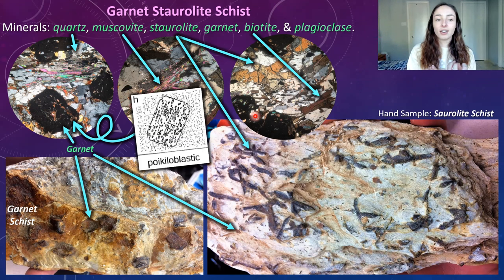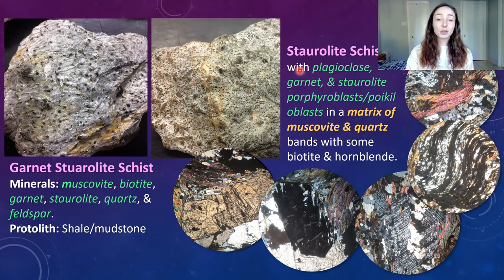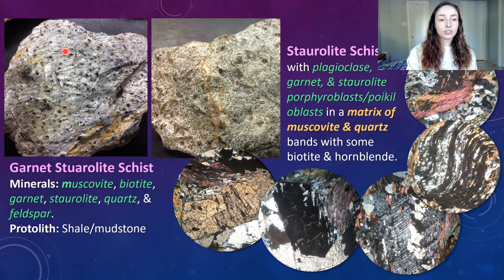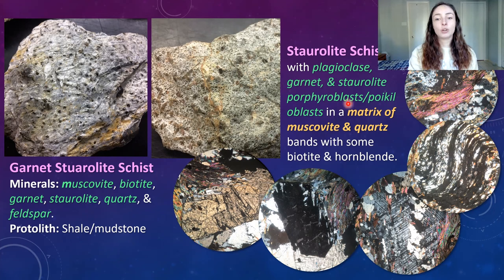Here we have two more samples of schist. The hand sample is a garnet staurolite schist — we've got little tiny garnets on the left, larger garnets and staurolite on the right. Over here to the right we've got what we're calling a staurolite schist, containing plagioclase, garnet, and staurolite porphyroblasts and poikiloblasts in a matrix of muscovite and quartz bands with some biotite and hornblende.